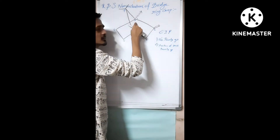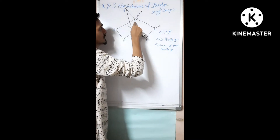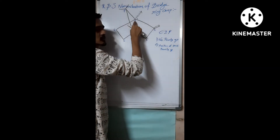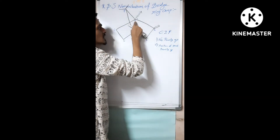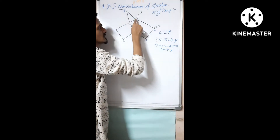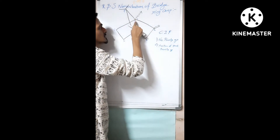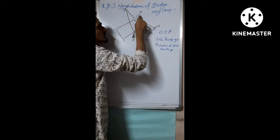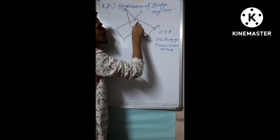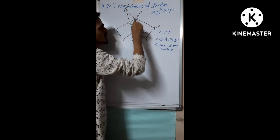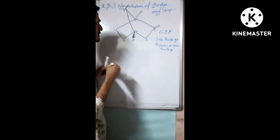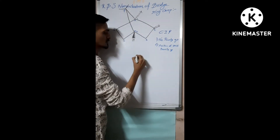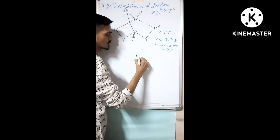At carbon number one, you can see it is a chiral carbon. It is a chiral carbon because it has four different attachments — one, two, three, and four groups are all different. Let me write out all four groups; I am considering carbon number one.